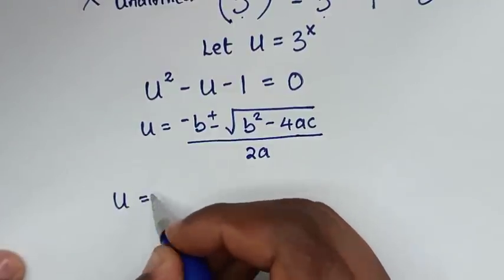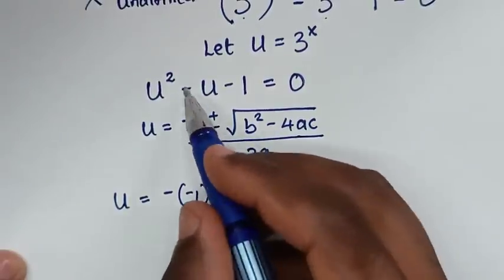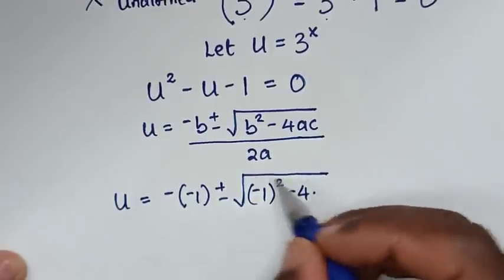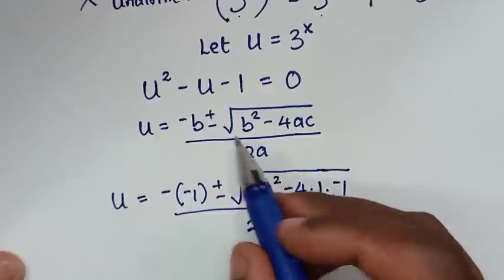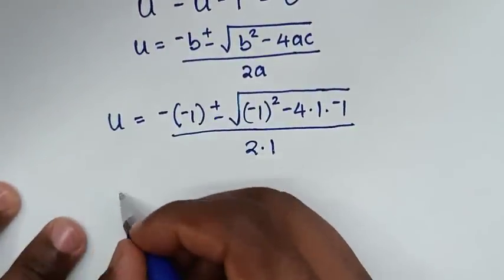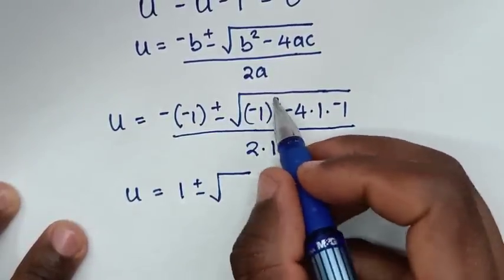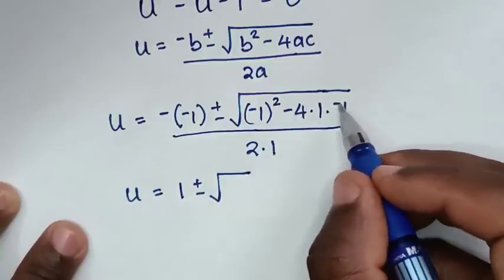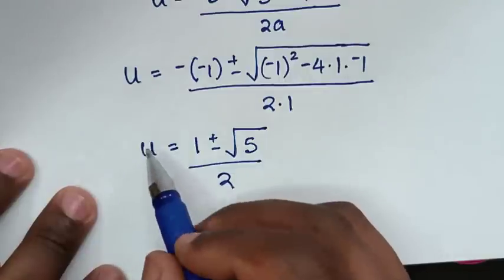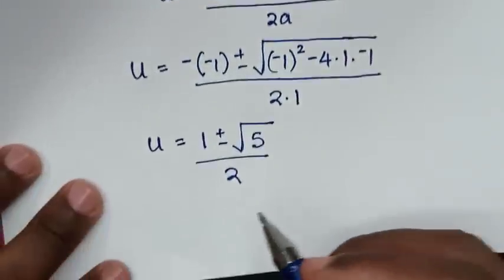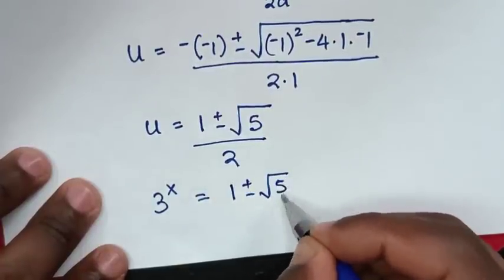Substituting the values where a equals 1, b equals negative 1, and c equals negative 1, it will be u equals negative (negative 1) plus or minus square root of (negative 1) squared minus 4 times 1 times (negative 1), all over 2 times 1. This gives u equals 1 plus or minus square root of 1 plus 4, which is the square root of 5, over 2.